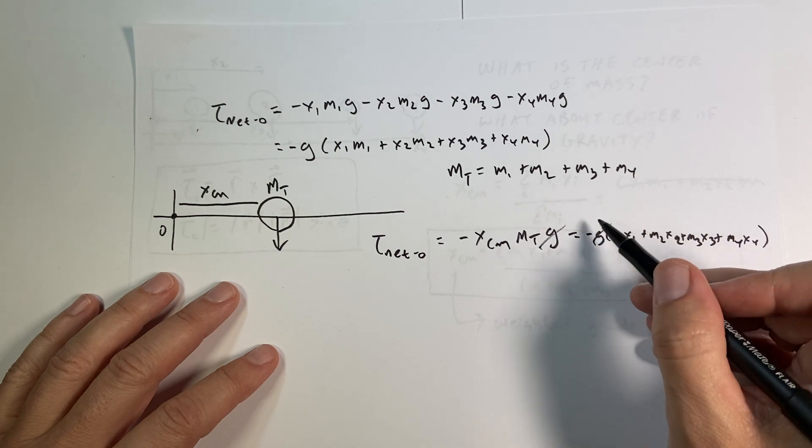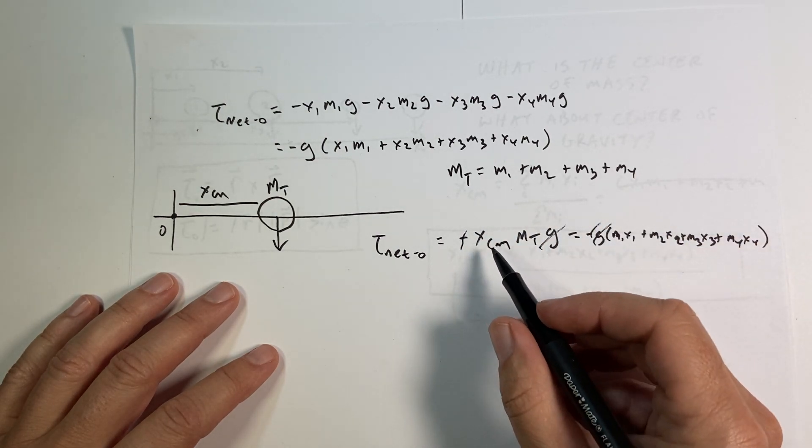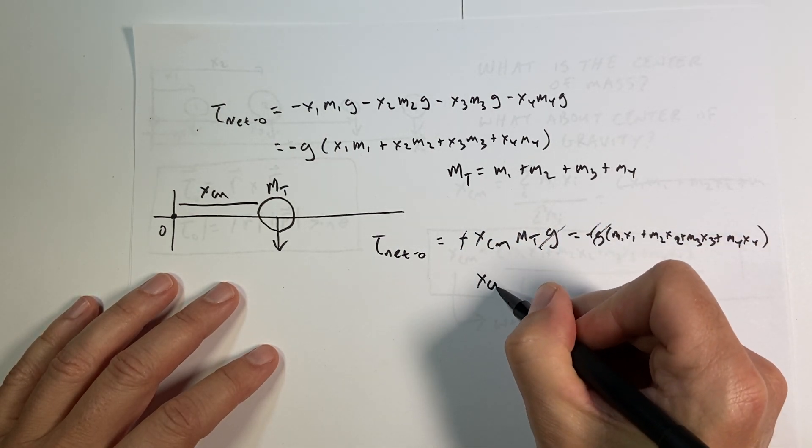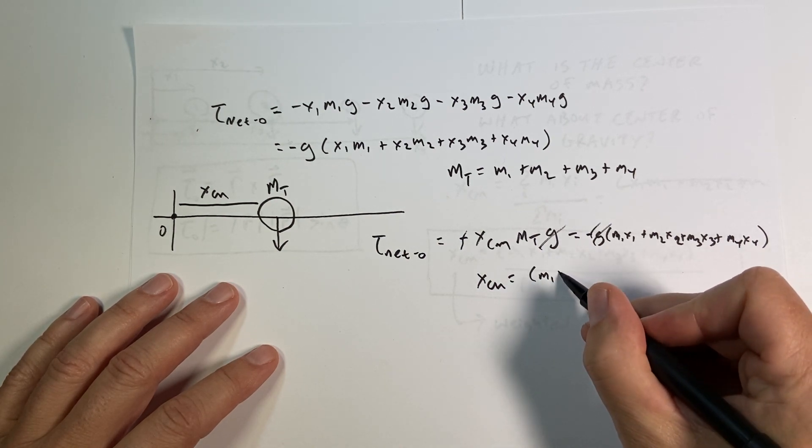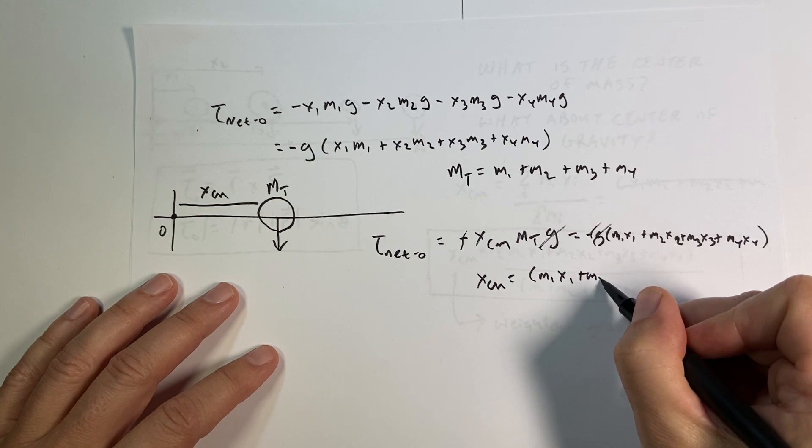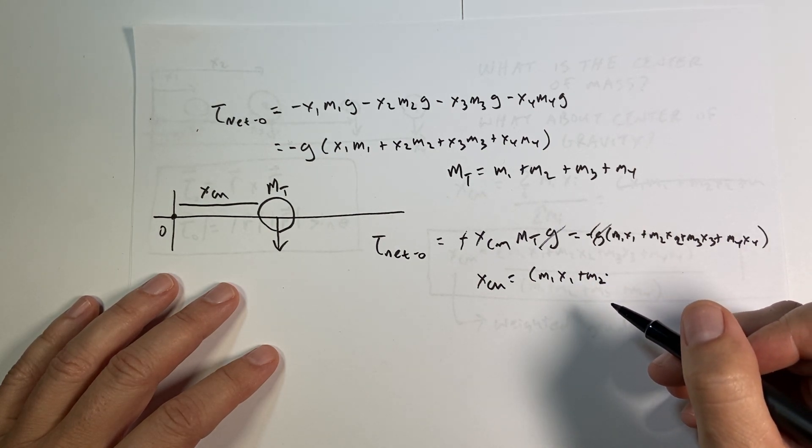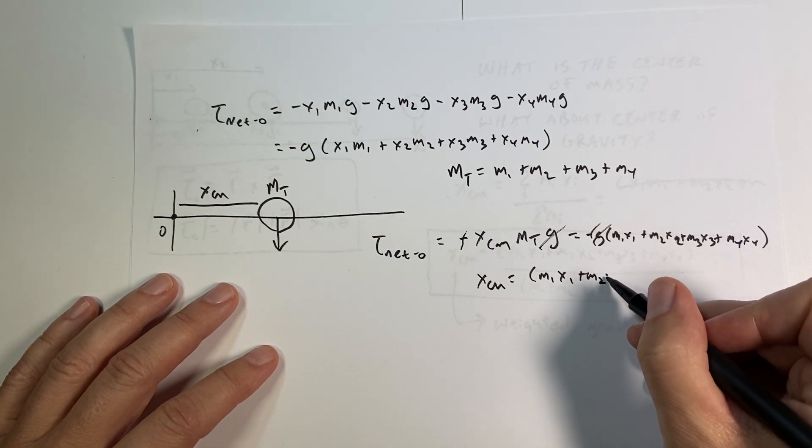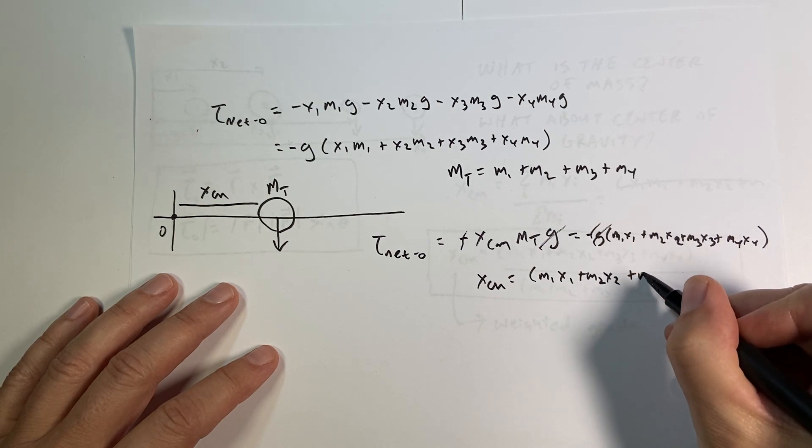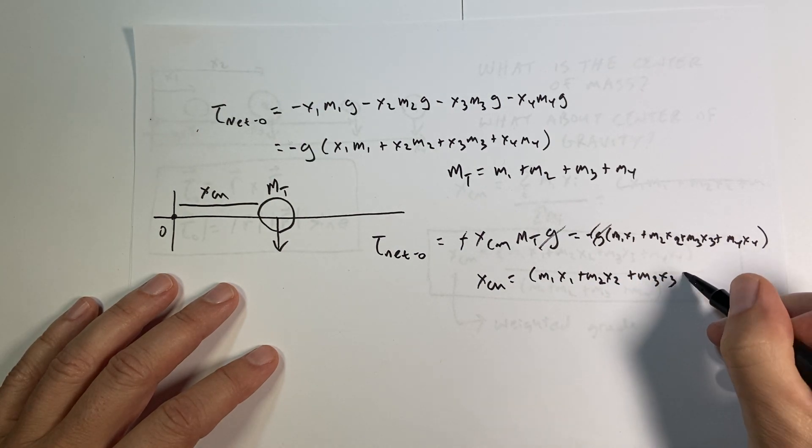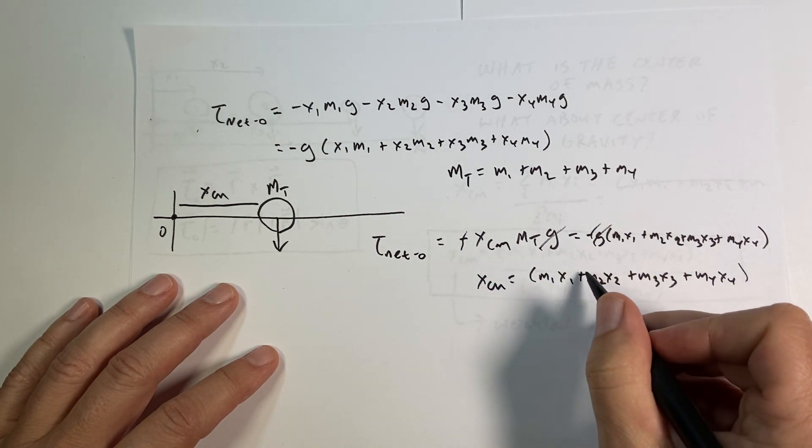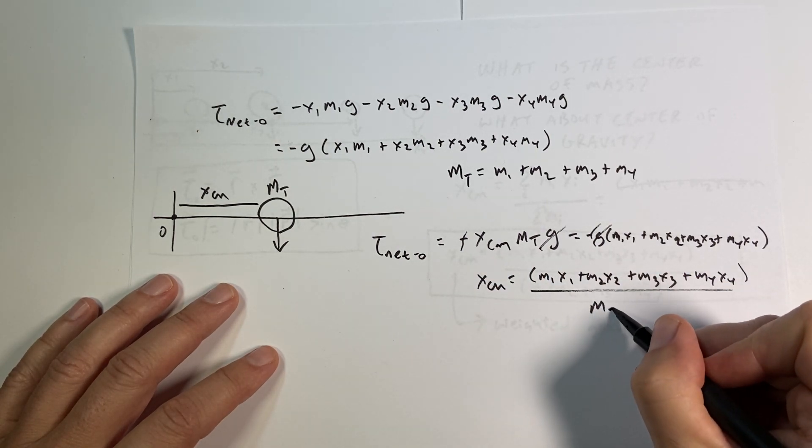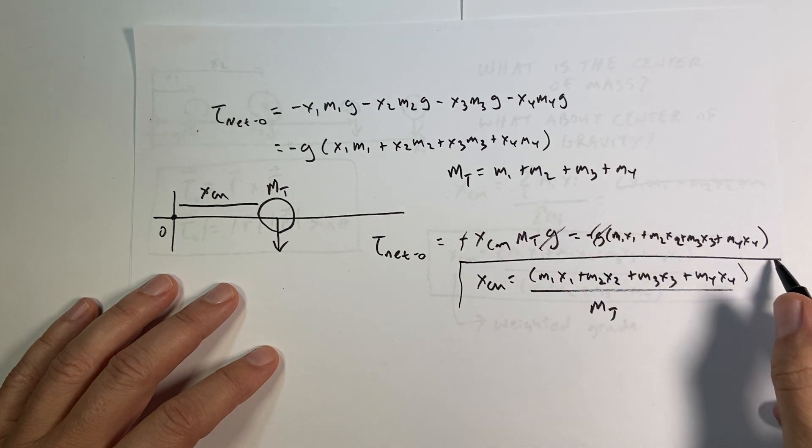Negative g m1 x1 plus m2 x2 plus m3 x3 plus m4 x4. The g's cancel, the negatives cancel, and I solve for x center mass. As you got it, m1 x1 plus m2 - I should have only had like three masses, don't you think, because they would have been a lot easier - x2 plus m3 x3 plus m4 x4. All that divided by the total mass. And there you go, the center mass.